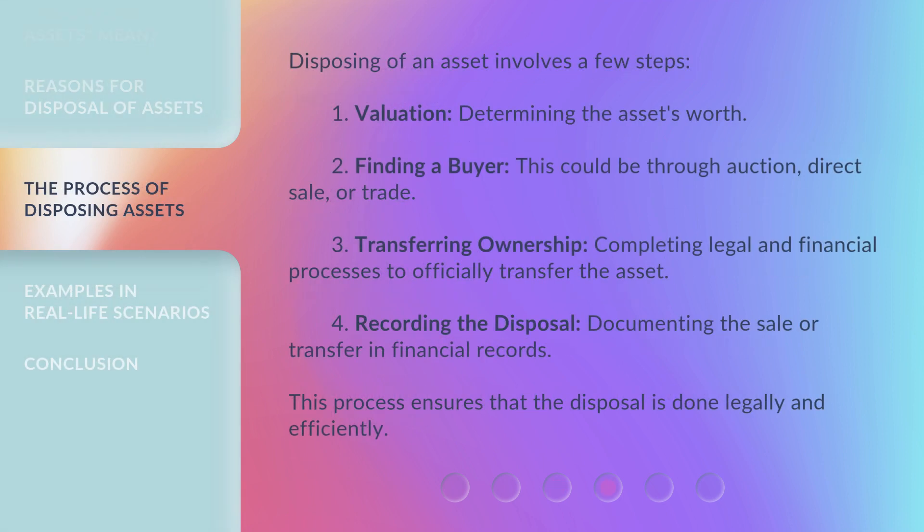Disposing of an asset involves a few steps. First, valuation — determining the asset's worth. Second, finding a buyer — this could be through auction, direct sale, or trade. Third, transferring ownership — completing legal and financial processes to officially transfer the asset. Fourth, recording the disposal — documenting the sale or transfer in financial records. This process ensures that the disposal is done legally and efficiently.